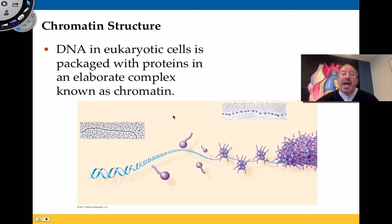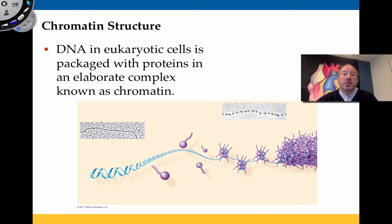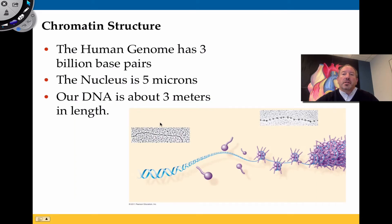The DNA in a eukaryotic cell is packaged by histone proteins, which have little tails coming off of them. Here's a transmission electron micrograph of naked DNA, and here it is wrapping around histone proteins forming the nucleosome. Chromatin is an older term referring to the colored material inside the nucleus. The human genome has 3 billion base pairs — quite a lot.